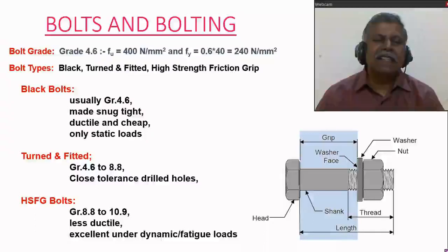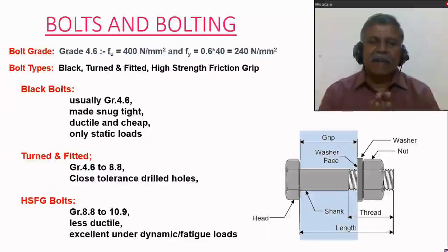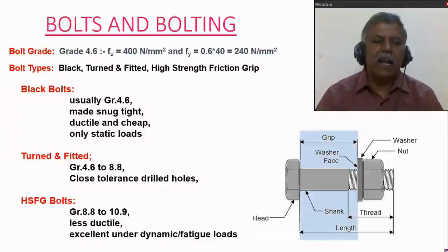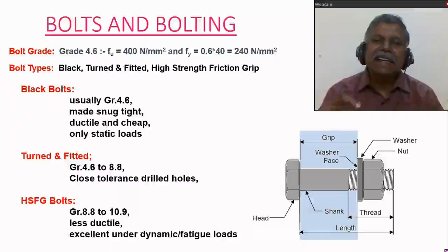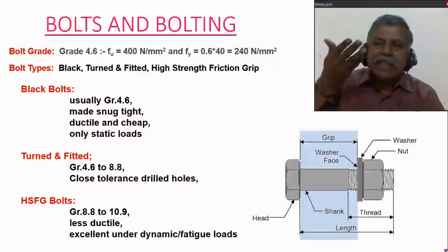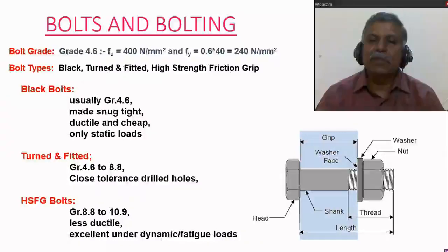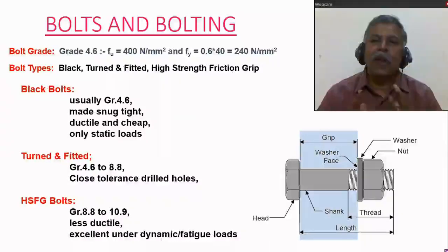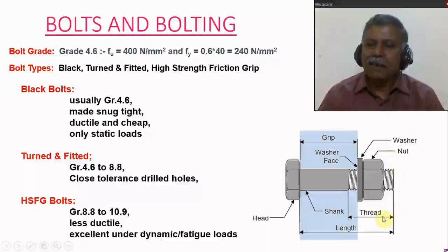The next type is HSFG bolts, which stands for high strength friction grip bolts. These bolts are available in grades from 8.8 to 10.9 and are less ductile in nature. This is because when the carbon content in steel increases, strength increases but ductility is reduced. These bolts can be used under dynamic and critical loads. If you want to design a structure to withstand wind and seismic loads, you have to use high strength friction grip bolts.